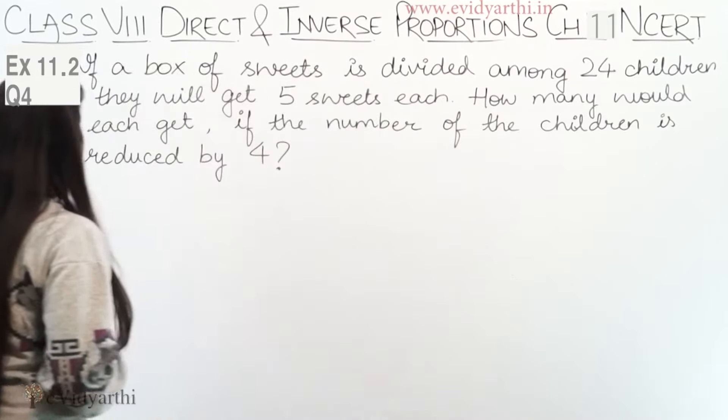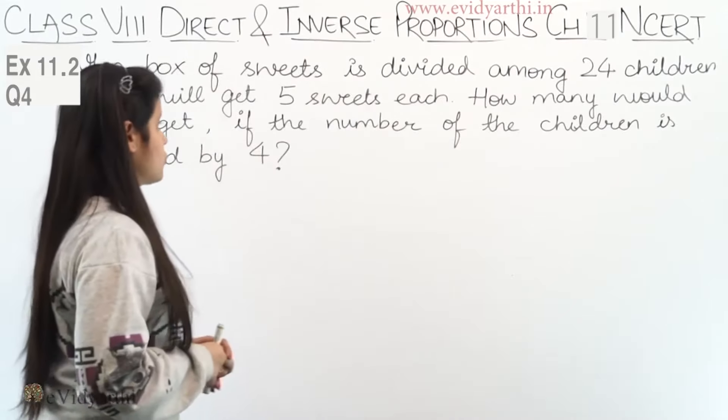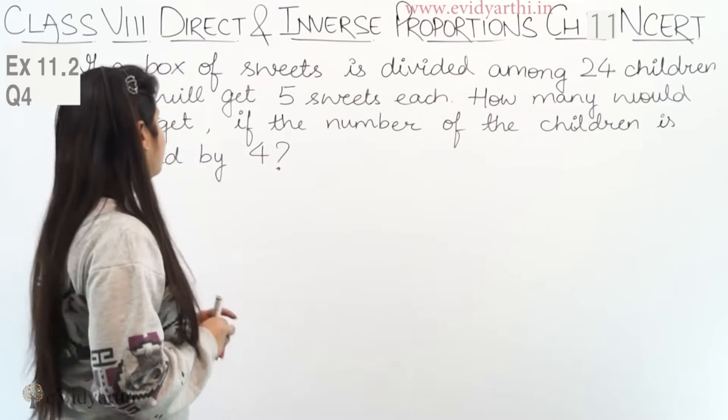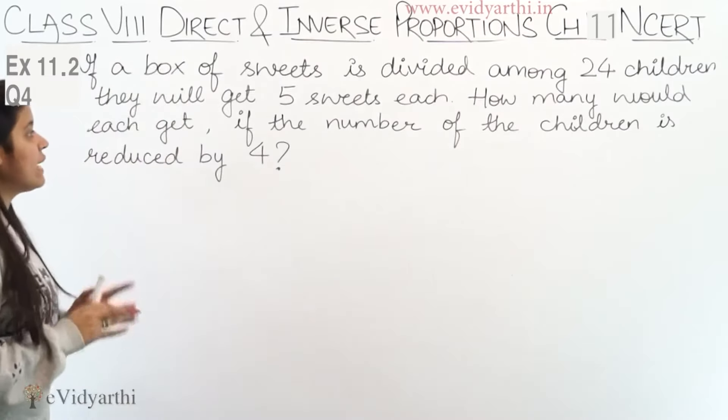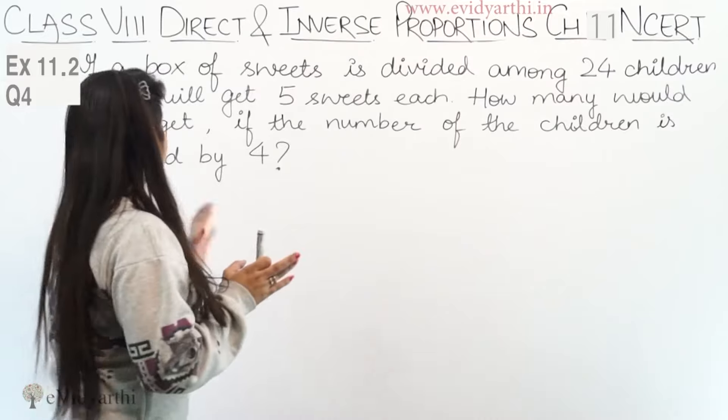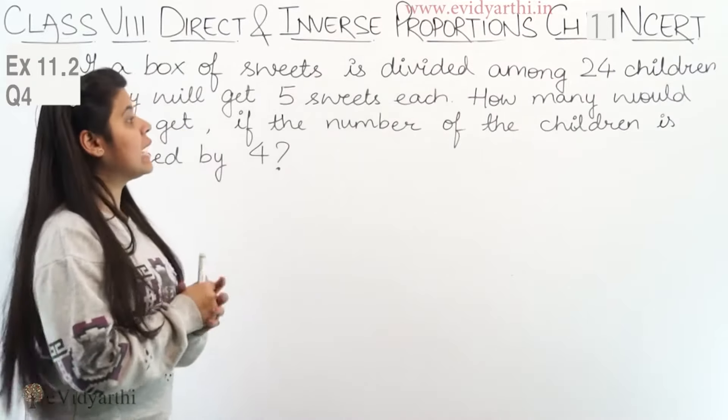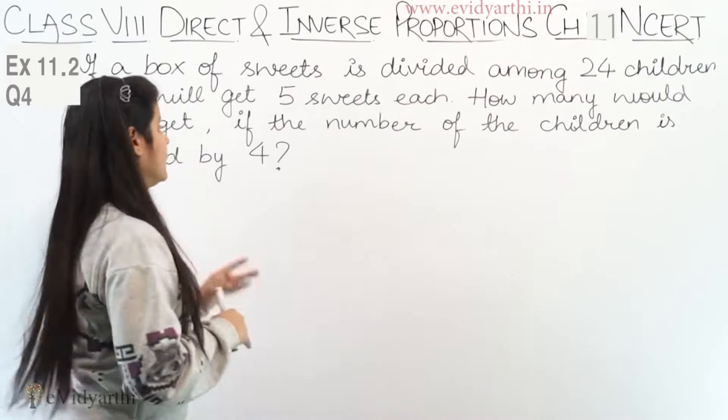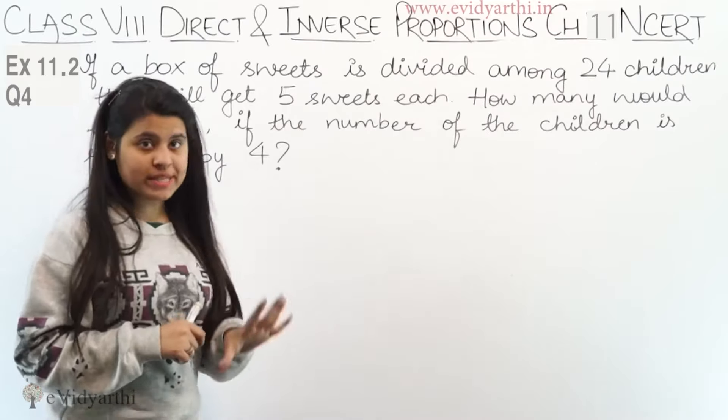In this question, if a box of sweets is divided among 24 children, they will get 5 sweets each.